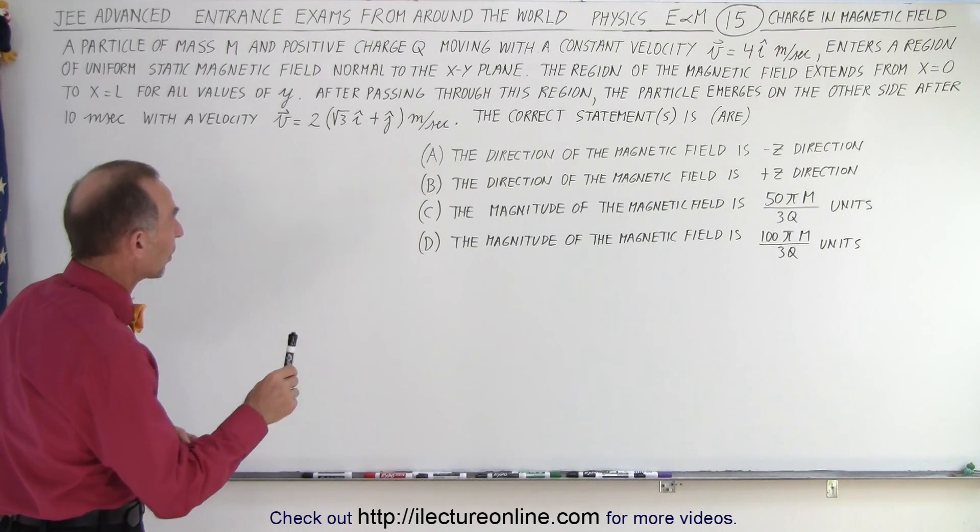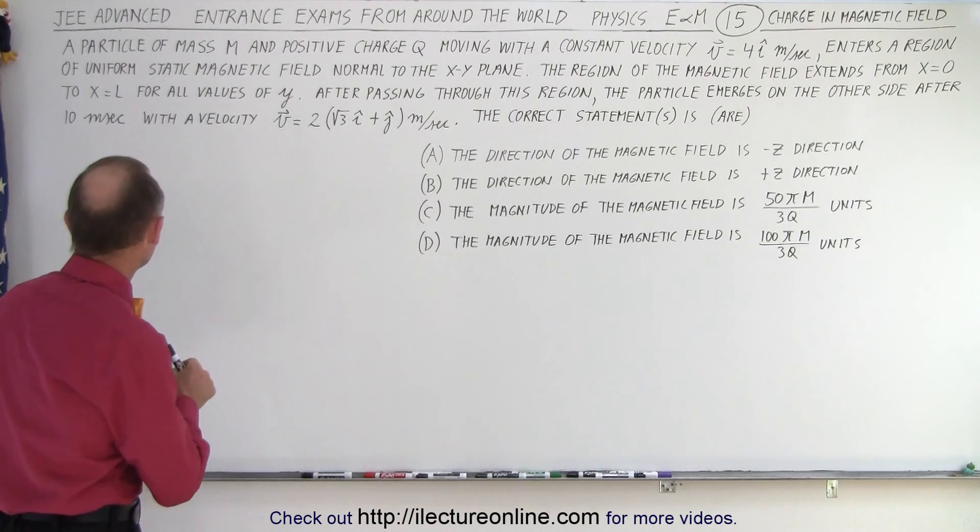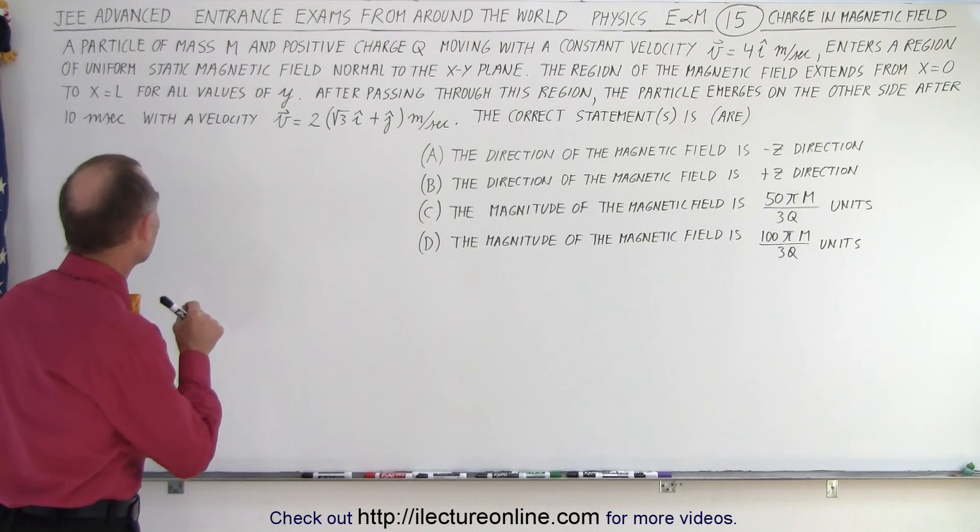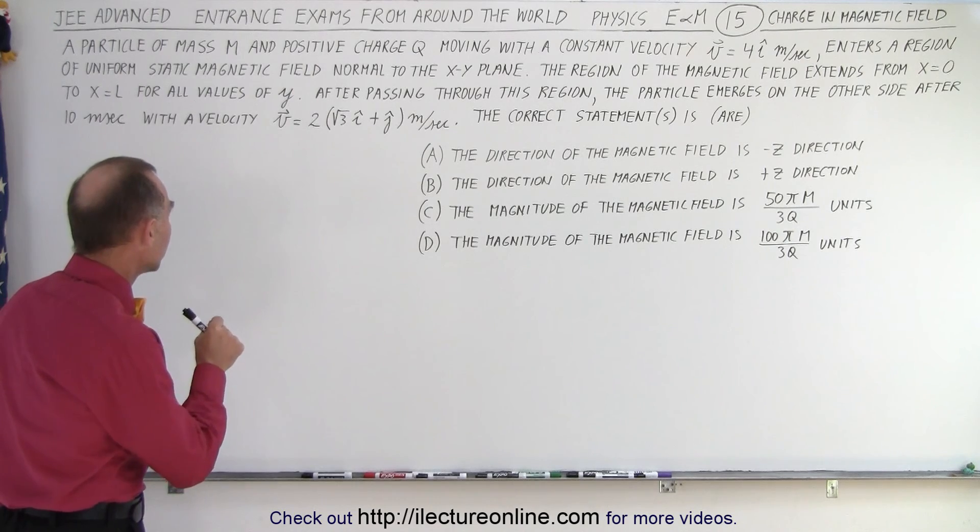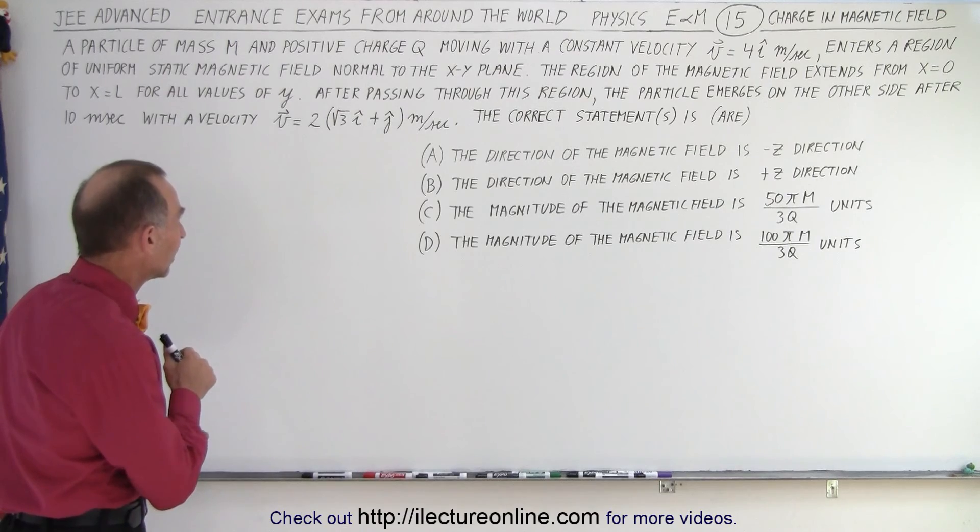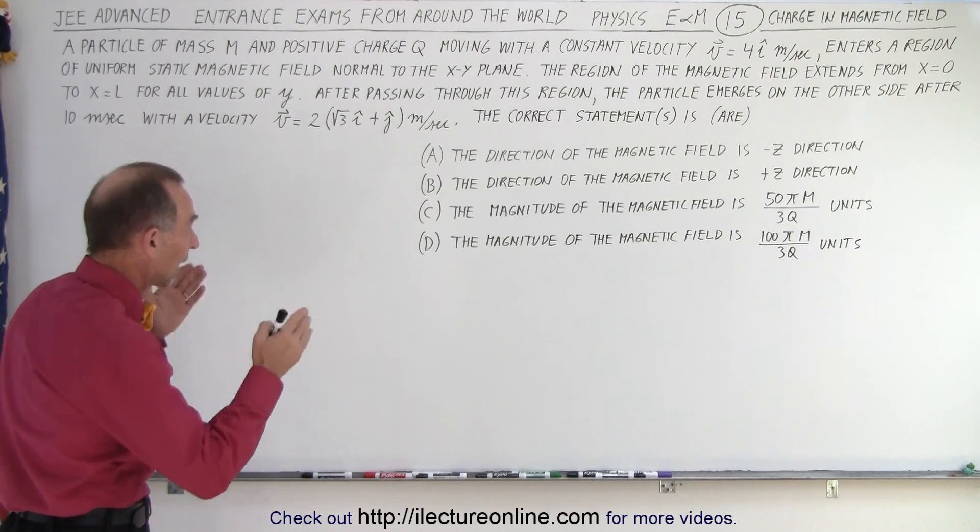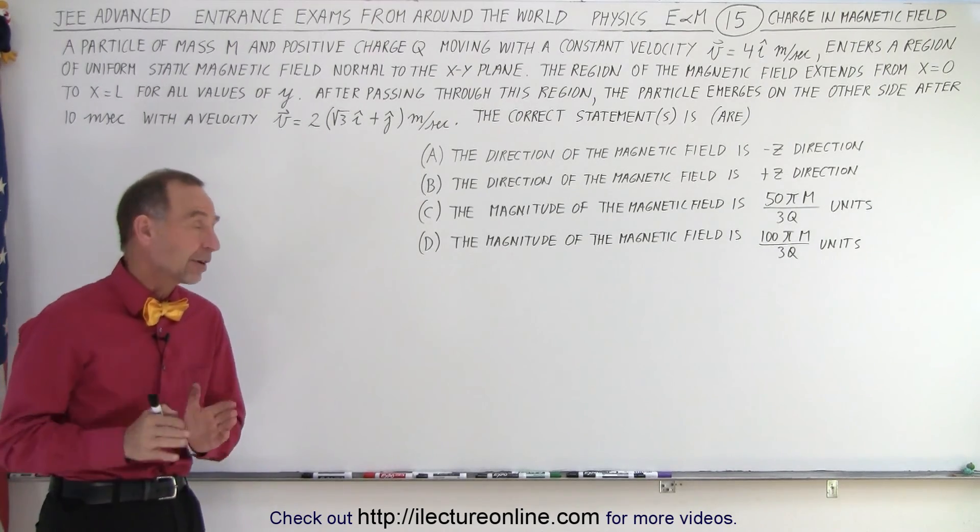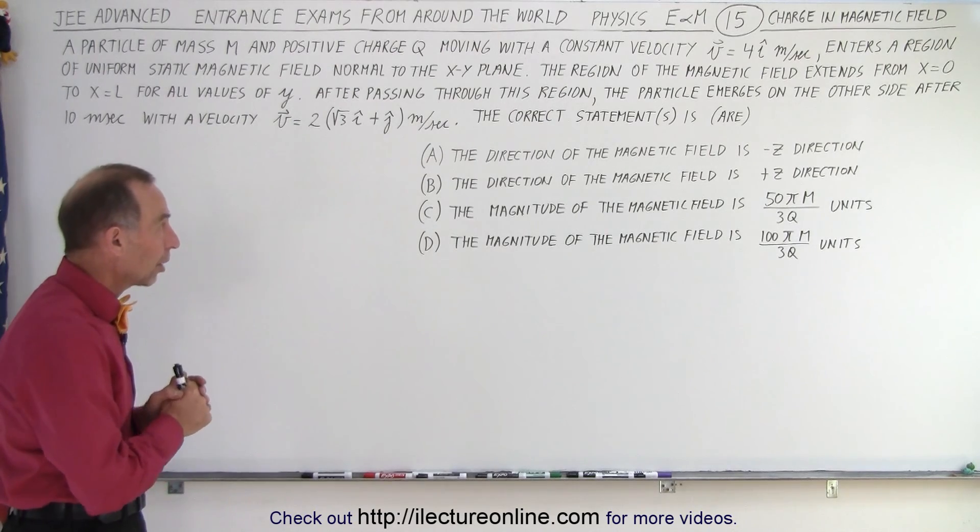After passing through this region, the particle emerges on the other side after 10 milliseconds with a velocity v equals 2 times the square root of 3 in the i direction plus 2 times j in the y direction in meters per second. We have four statements and we're trying to figure out which of those four are correct.